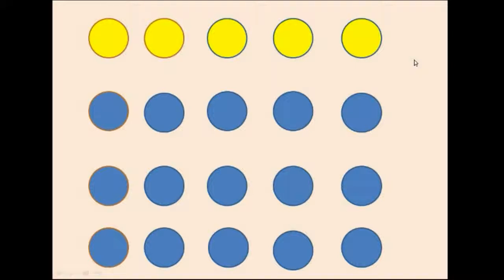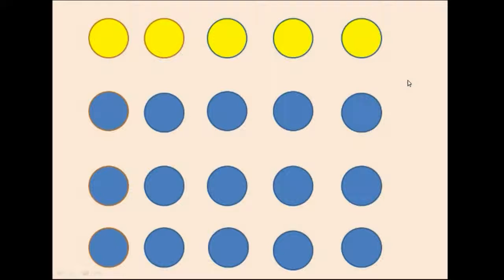Number needed to treat is usually 1 divided by absolute risk reduction, also known as attributable risk. But the main thing to know is that it's 1 divided by a certain type of incidence data, and that's how we get it. For example, since our incidence here was 5 out of 20, if we flip that or get the inverse of that, that would mean that our result would be 20 divided by 5, which is equal to 4. In other words, we would get the number 4, and that would be our number needed to treat.